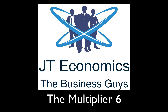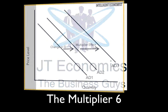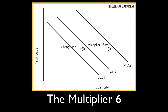Welcome to the sixth video in the mini-series on the multiplier. I got this image from The Intelligent Economist, and we're just trying to explain what the multiplier effect is, which is the increase in national income greater than an initial injection.